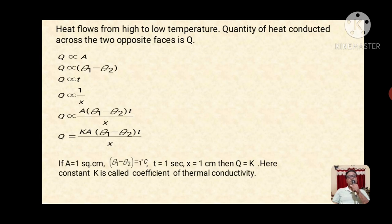Combining all these factors, we can write Q proportional to A times (theta 1 minus theta 2) times t upon x. If A equals 1 square cm, theta 1 minus theta 2 is 1 degree Celsius, t is 1 second, and x is 1 cm, then Q equals K. Here constant K is called the coefficient of thermal conductivity.